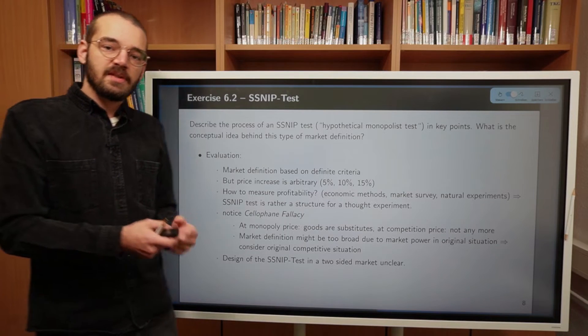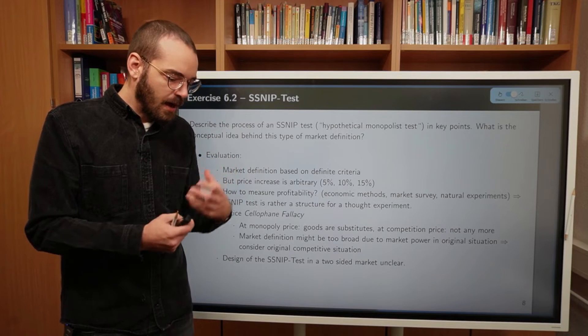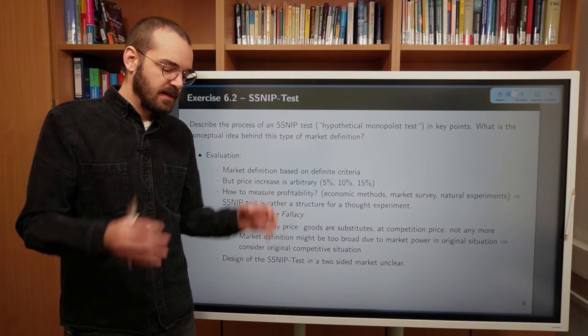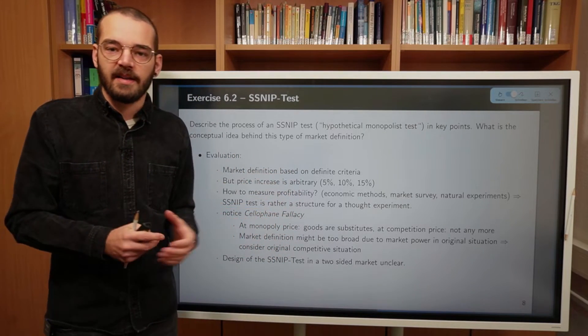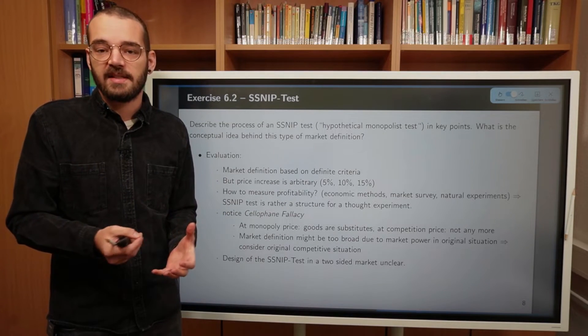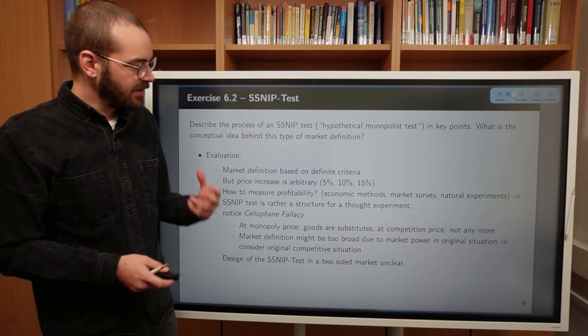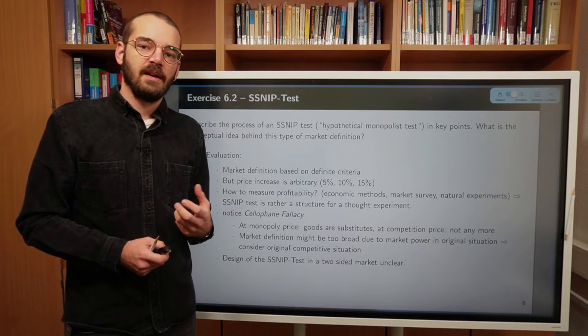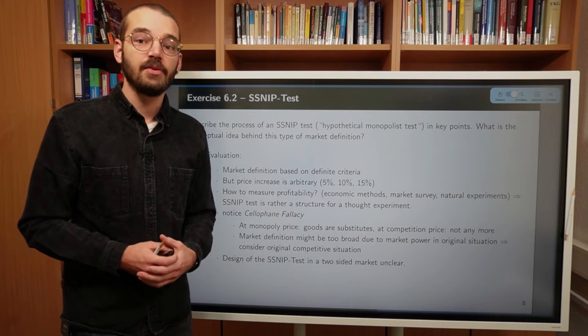In the end, we can conclude that the SSNIP test is rather a structure for a thought experiment. So we can use the SSNIP test in order to think about how would we define a market such that we can find the relevant market on which monopolistic pricing would be profitable. This is really a thought experiment. This gives us a structure to think in when we want to analyze pricing behavior and relevant markets in the real world.